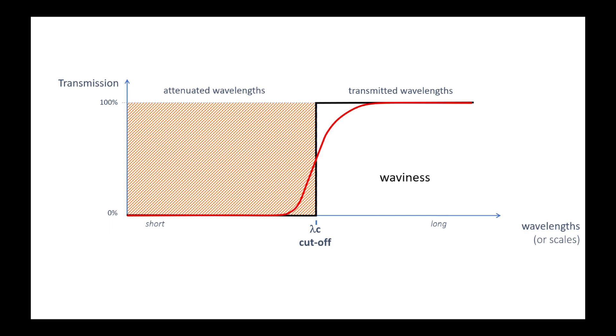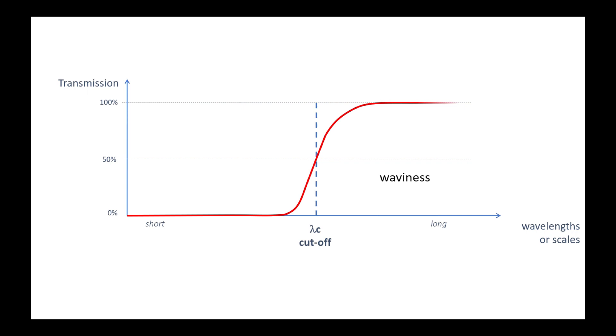For short wavelengths, i.e. high frequencies, the filter attenuates almost everything. As we get closer to the cutoff value, the transmission curve rises. At the exact value of the cutoff, the transmission is 50%. So its attenuation is also 50%.